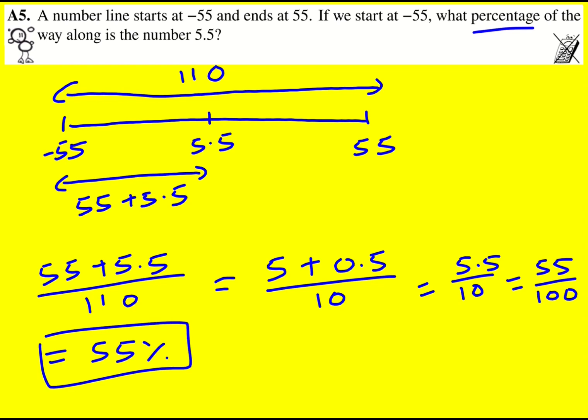So you could write 60.5 over 110 and of course cancel that down. It's just, if you can spot this, then it's a little bit quicker.